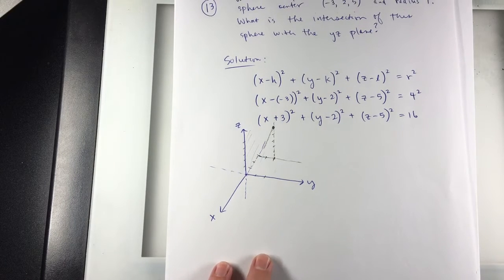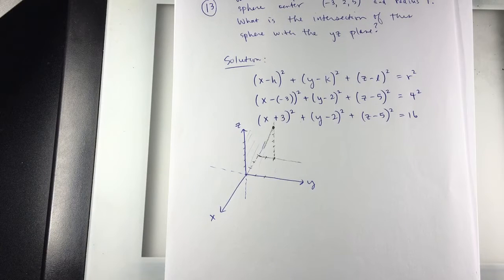Now, since it's three units and the radius of the sphere is 4, then I know it does intersect the yz plane. If the radius was less than 3, or if the radius was 3, it would touch at one point. But the radius is more than 3. So what is the intersection with the yz plane? It's a circle.